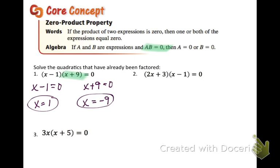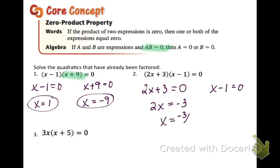For number two we are going to do the same thing. We are going to set the first parenthesis equal to zero and the second one. The first one we are going to subtract the three over first and then divide by two — we get x equals negative three over two. For the second one we add one over, we get x equals one.